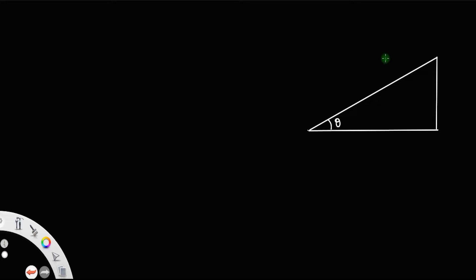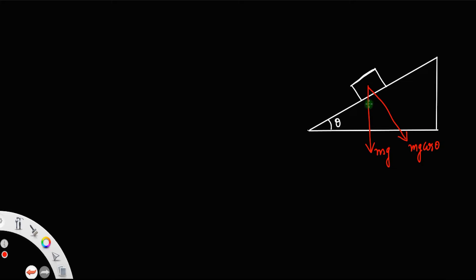Consider an inclined plane with inclination theta. Let a mass m be placed on its surface. We have different forces acting on the mass: mg acting vertically downward, mg cos theta perpendicular to the plane (since this angle is theta), and mg sin theta acting along the plane.